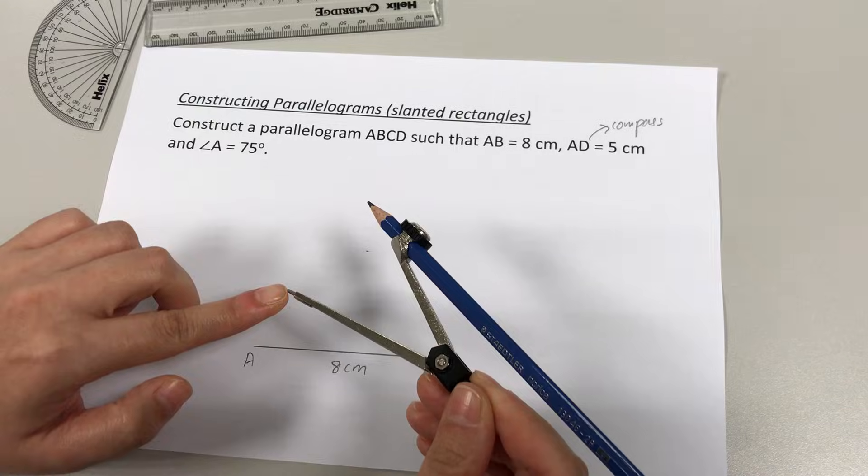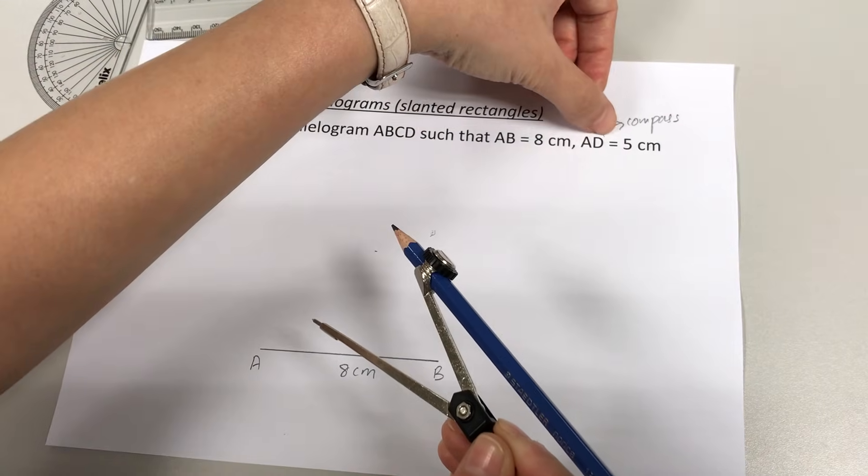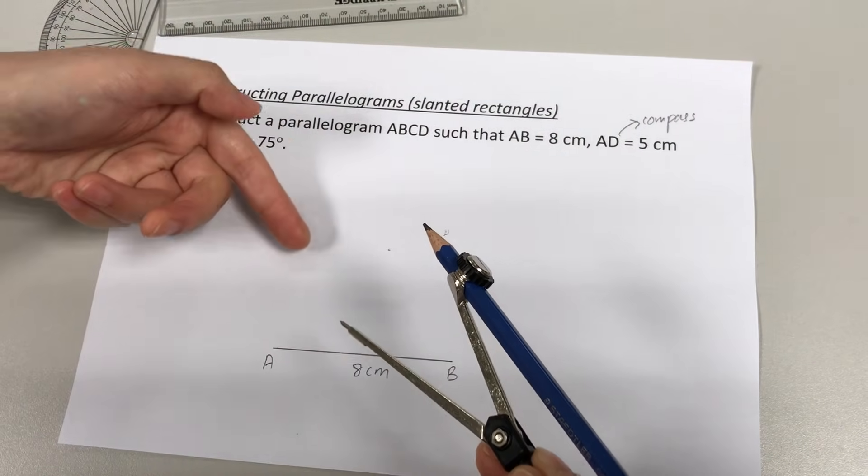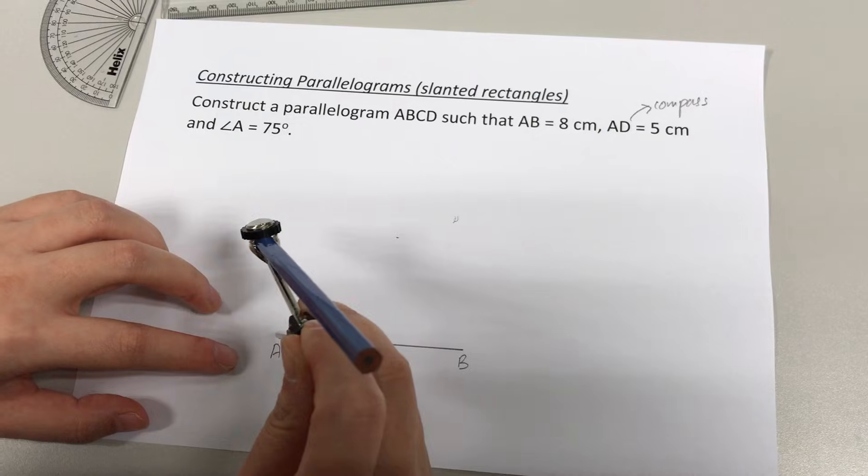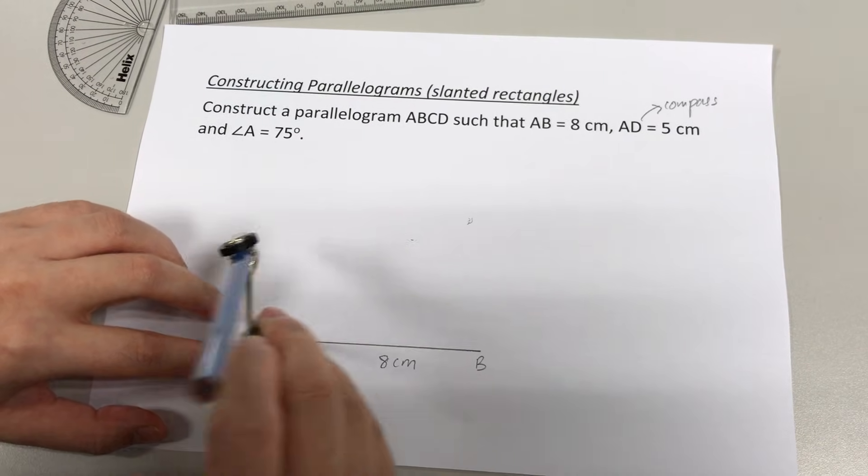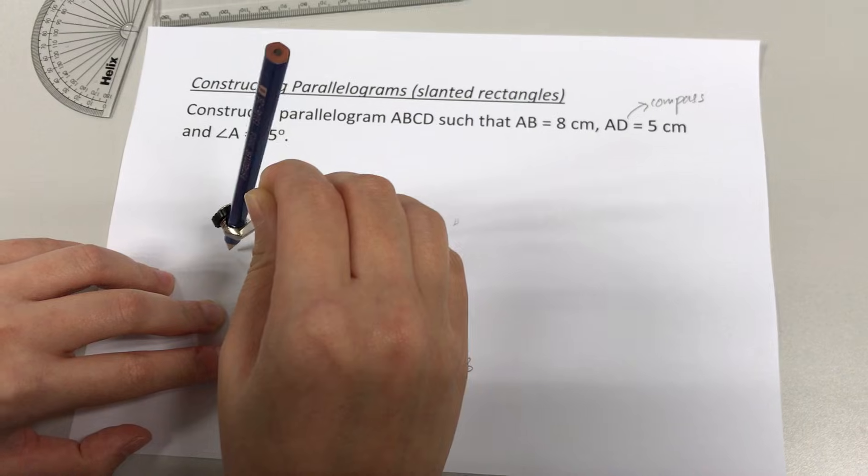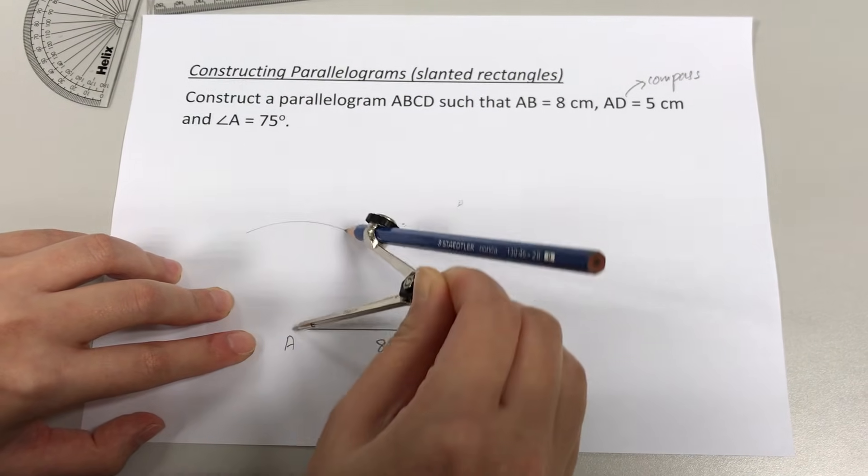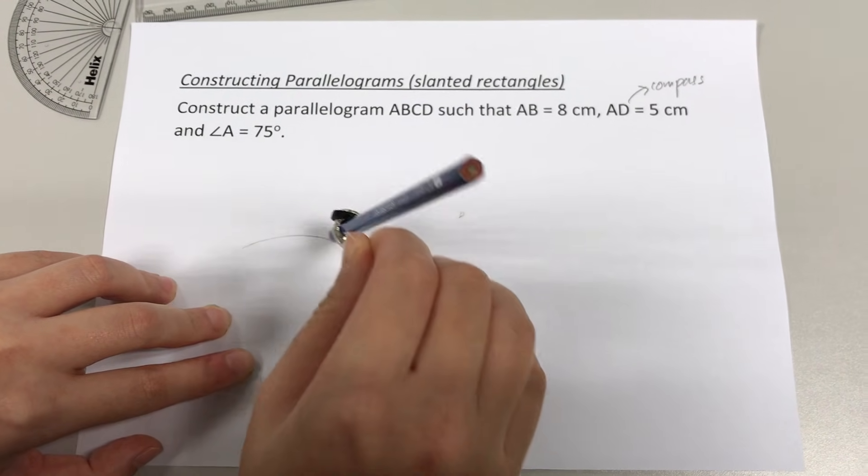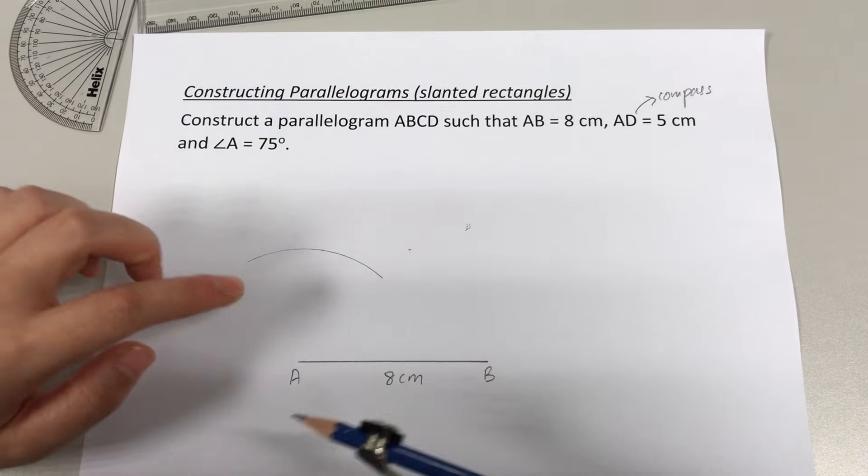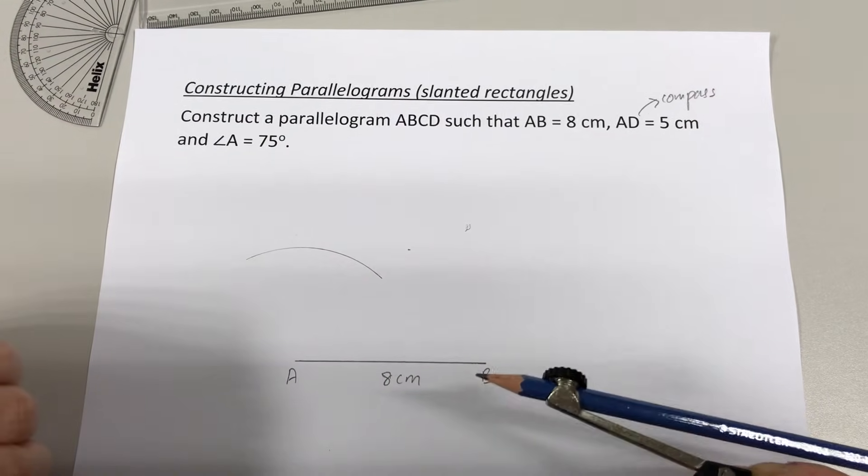I can put it at A or D. Obviously, I do not have point D yet, so I'm going to place it at point A like this. I place my needle at A and I'm going to draw a curve with my compass. So with that, I have made use of this piece of information.